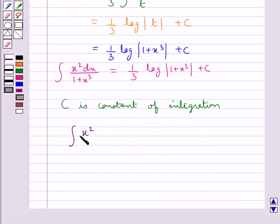Thus our final answer is integral x squared over 1 plus x cubed dx equals 1 upon 3 log modulus 1 plus x cubed plus c, where c is constant of integration.